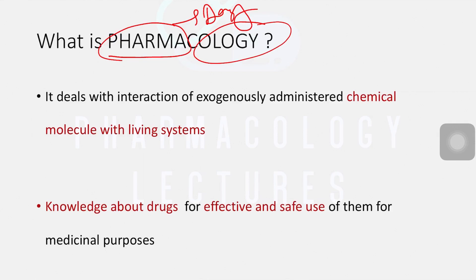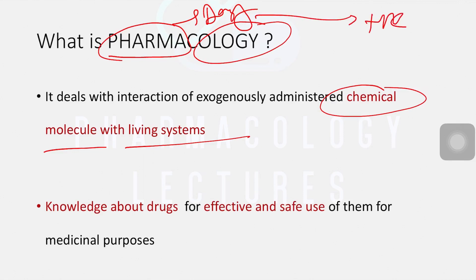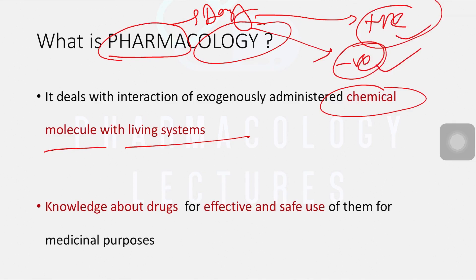Pharmacology is basically the science or study that involves knowledge related to drugs. We are introducing chemical substances - chemical molecules - into a living system, into a human body. We study what happens once that substance goes into your body. These drugs produce positive effects, which is mainly why we use them, but they also have negative effects or side effects. All this knowledge about drugs is pharmacology - knowledge about drugs for effective and safe use for medicinal purposes.